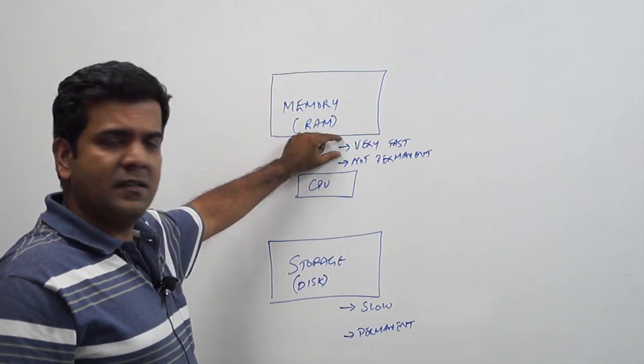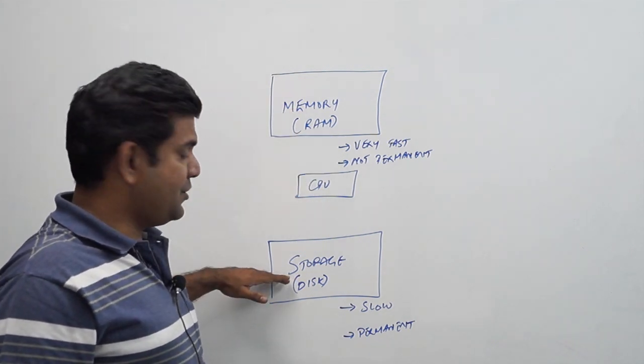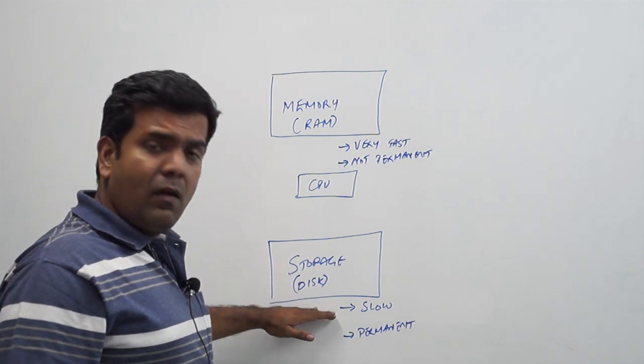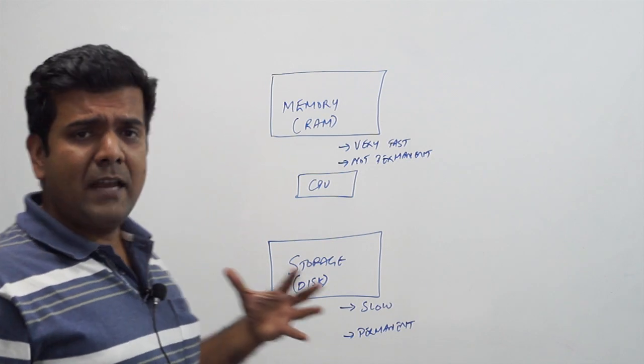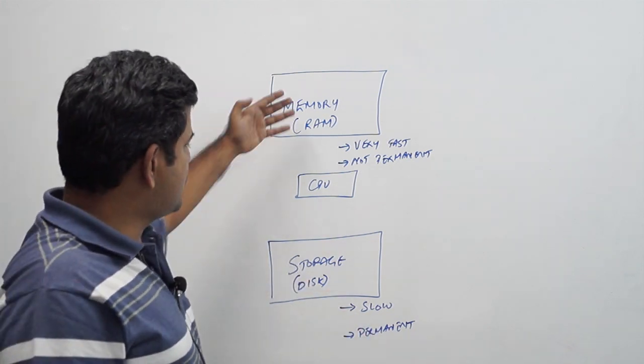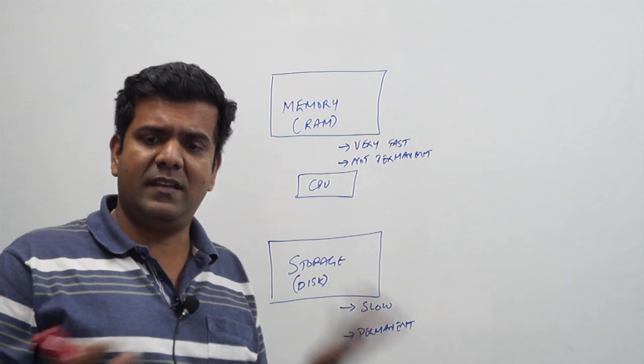And we saw that memory is very fast but it's not permanent, whereas storage or disk is slow but it is permanent. So the way an Oracle database is going to work is to make use of these three components and process the data.